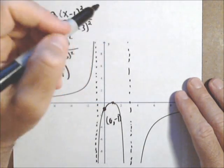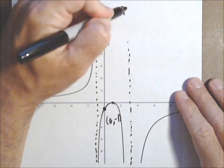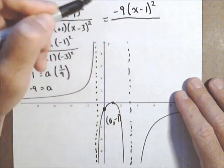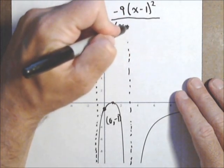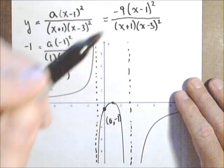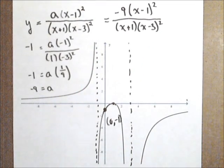We can now put together our rational function and check it in our graphing calculator. I'm going to put a negative nine in for a, times x minus one, the quantity squared in the numerator, over x plus one times x minus three squared. And that's how we can find the formula for a rational function given a graph.